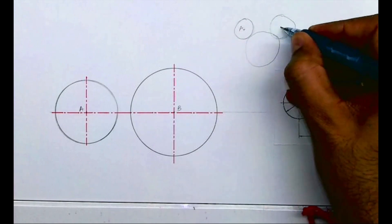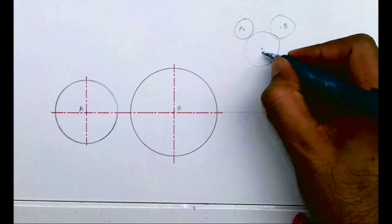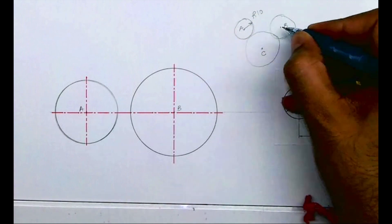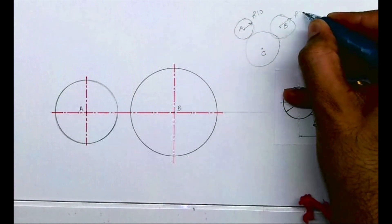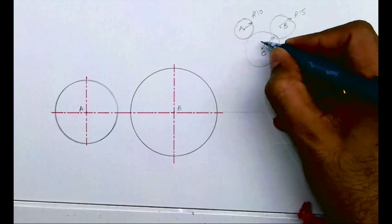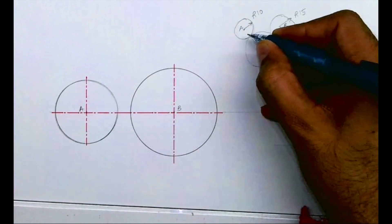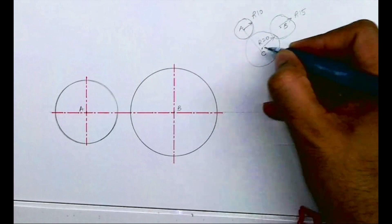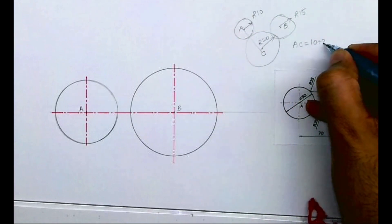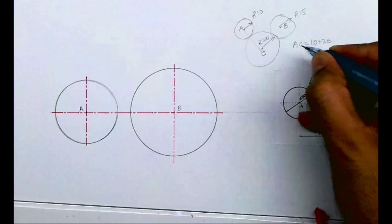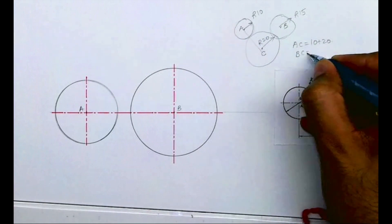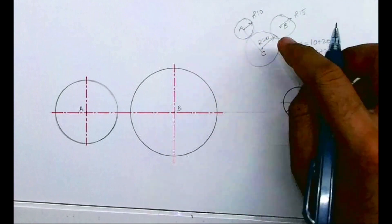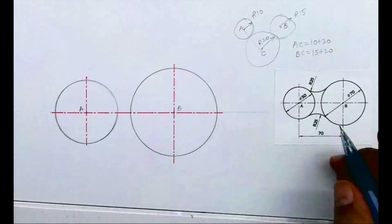This is point A, this is point B, and the center of this arc is C. The distance from A to C would be 10 plus 20, which is 30. The distance from B to C would be 15 plus 20, which is 35. That is how we can find the center of this arc.